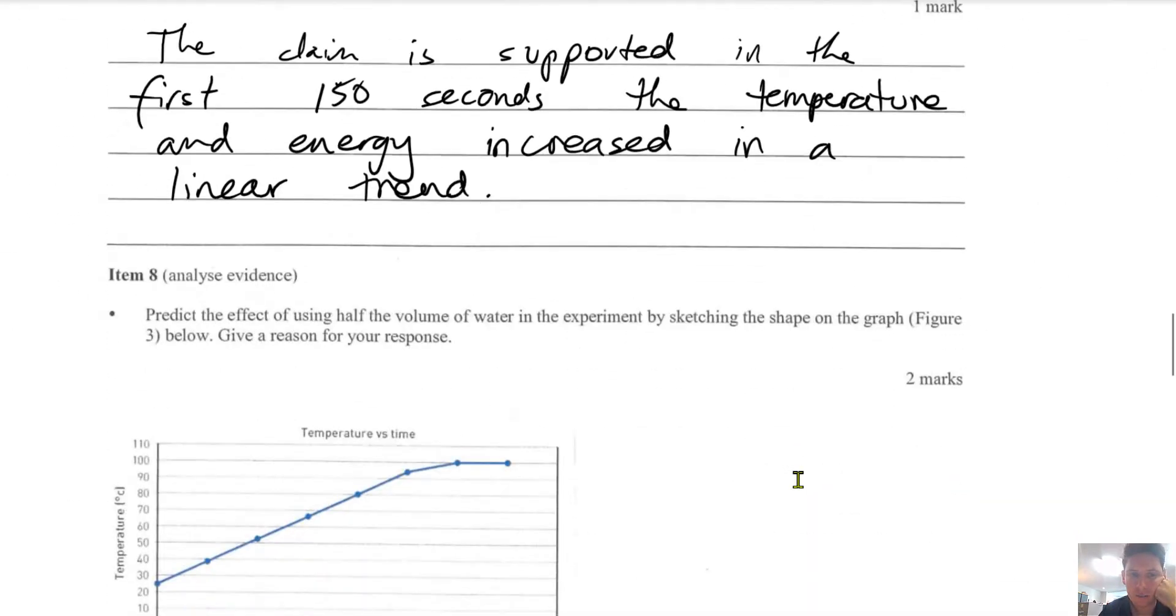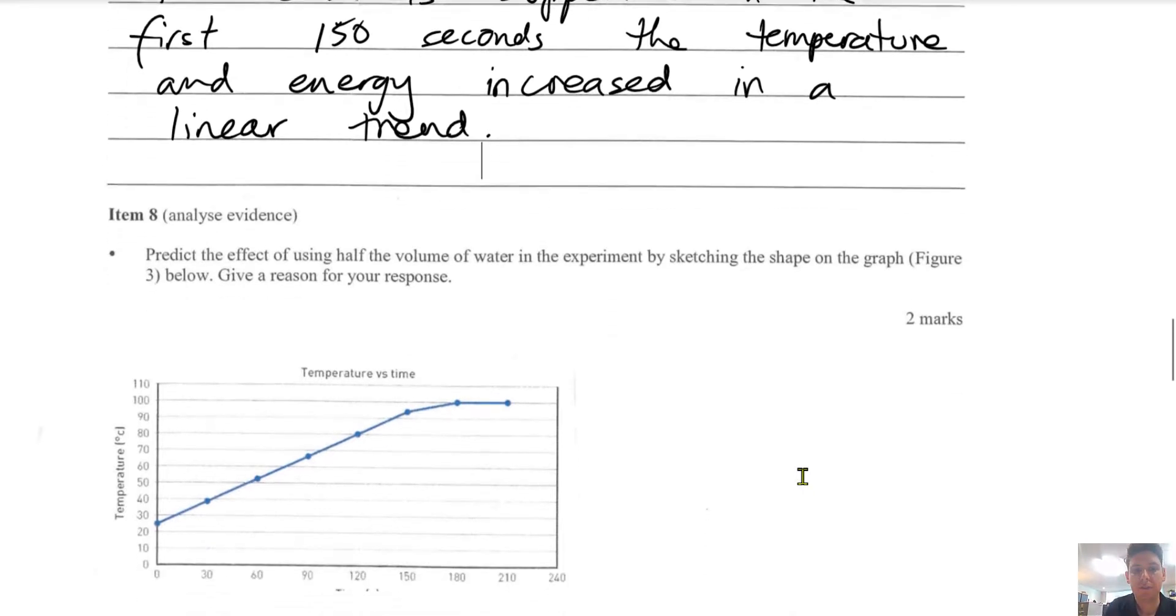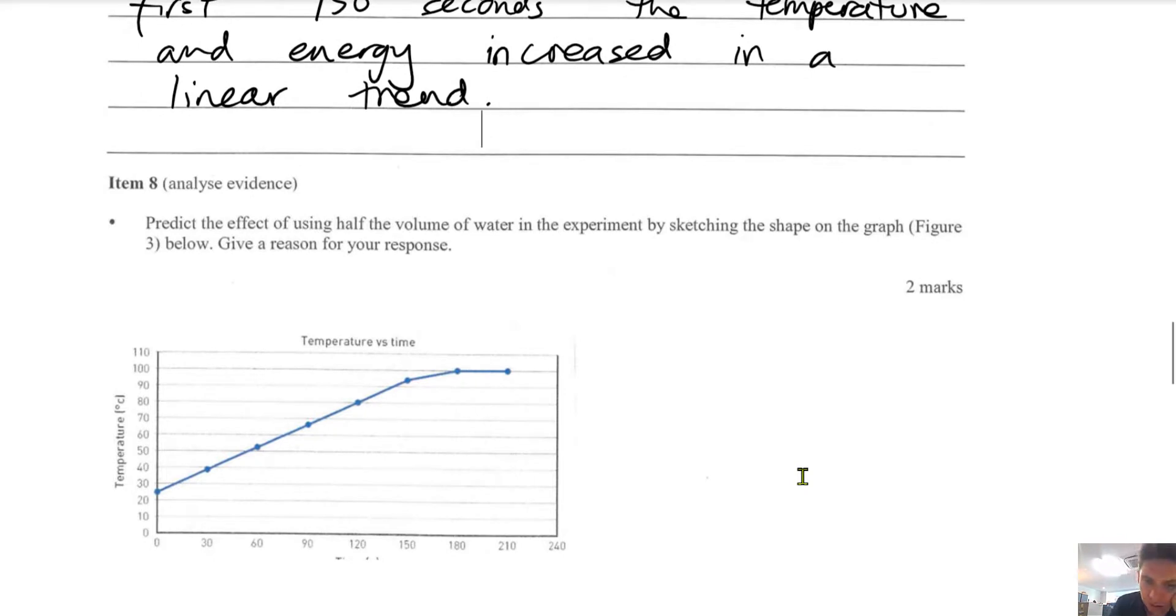Alright. Predict the effect of using half the volume of water in the experiment by sketching the shape of the graph. So half of 180 is 90. And then it will flatten out.